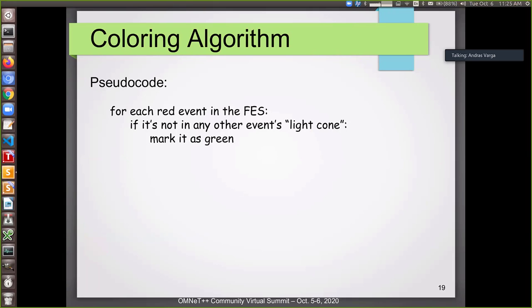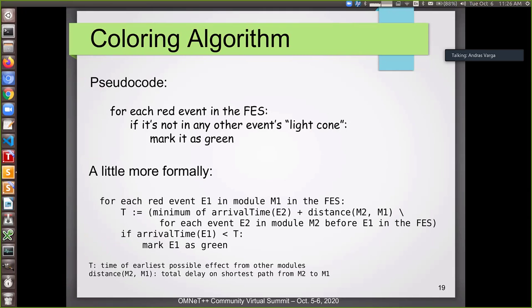So what is this coloring algorithm? Basically, it's kind of simple. It does one thing all the time continually. And this is the following: for each red event in the future event set, if it's not in any other event's light cone, then mark it as green. Just remember the time space diagram I've shown. If it's not in any other event's light cone, it can be marked as green. And of course, we can write it a little bit more formally, formulating the arrival times of events and the distance. But basically this means that we calculate t as the time of the earliest possible effect from any other module. And if the event is supposed to arrive earlier than any influence from other modules, then it's independent of all the other events.